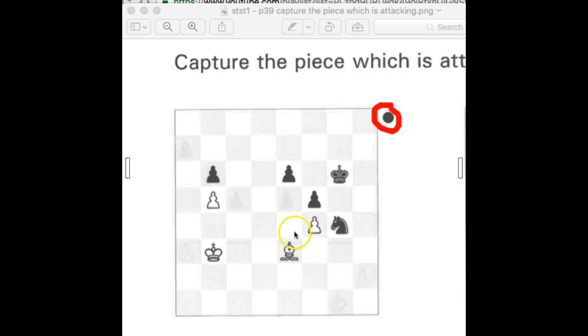If we look, we have to say, who's attacking? If you're not sure, just look and say: the pawns aren't attacking one. The king is too far away to be attacking. So it must be the bishop.